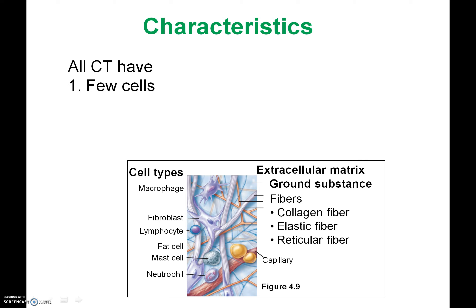For example, in this picture here you've got one cell here, another cell here, another one here, and so on — the cells are spaced out. Because the cells are spaced out, you have a lot of space in between the cells. That space is called extracellular matrix. Remember, 'extra' means outside the cell, so extracellular matrix is the space outside of the cells.